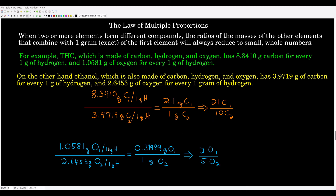Doing the same for oxygen: there are 1.0581 grams of oxygen per gram of hydrogen in THC, and 2.6453 grams per gram of hydrogen in ethanol. Taking that ratio gives about 0.4 grams of oxygen in THC for every one gram of oxygen in ethanol. Multiplying by 5/5 gives a small whole number ratio: two atoms of oxygen in THC for every five atoms of oxygen in ethanol.